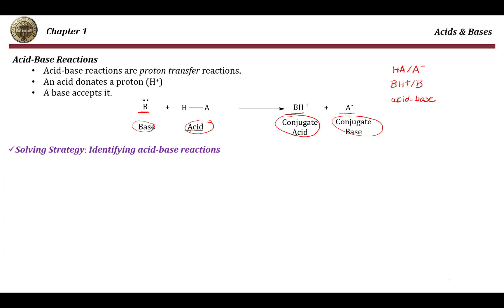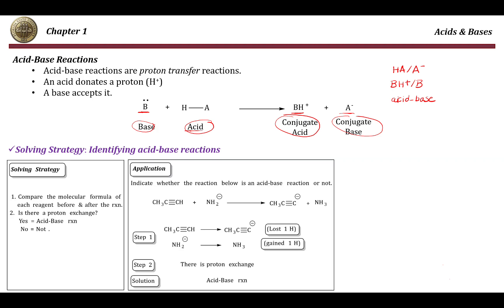How do we know if this is an acid-base reaction or not? You just have to look at the equation of the reaction, compare the structure or formula of the reactants before and after the reaction, and if you notice that there is a proton exchange process, this means that the reaction is an acid-base reaction. If not, then this is not an acid-base reaction.